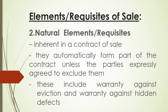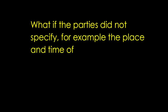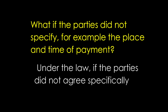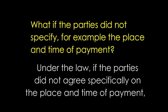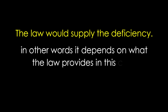The third kind of elements or requisites are the so-called accidental elements or requisites. They are present or absent in the contract of sale depending on the particular stipulations of the parties. Examples are place of payment, time of payment, interest, and penalty. If the parties did not specify the place and time of payment, under the law, the law will supply the deficiency — in other words, it depends on what the law provides.